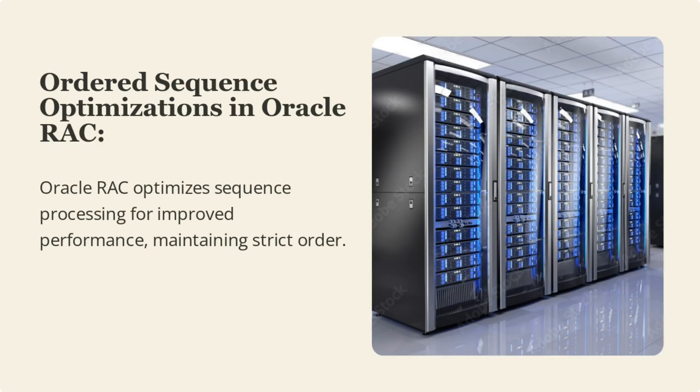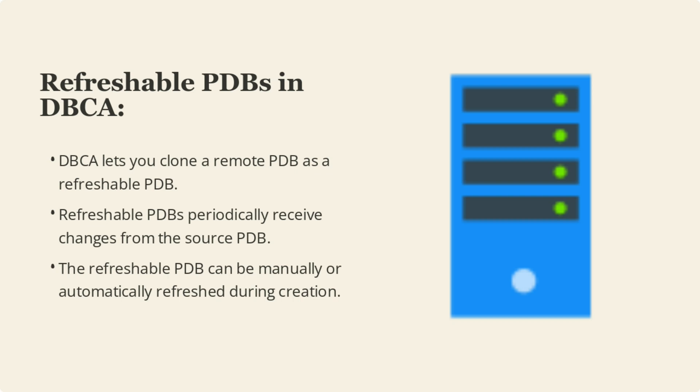Oracle 23c introduces ordered sequence optimizations in Oracle RAC, optimizing sequence processing for improved performance while maintaining strict order. DBCA allows cloning of a remote PDB as a refreshable PDB. These refreshable PDBs can periodically receive changes from the source PDB and can be manually or automatically refreshed during creation.